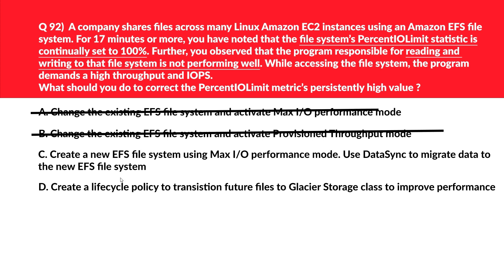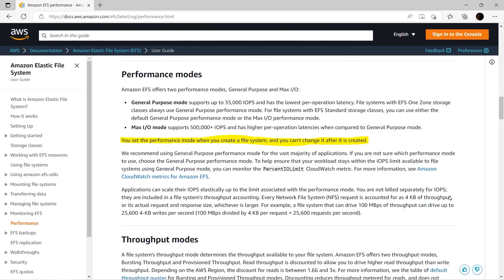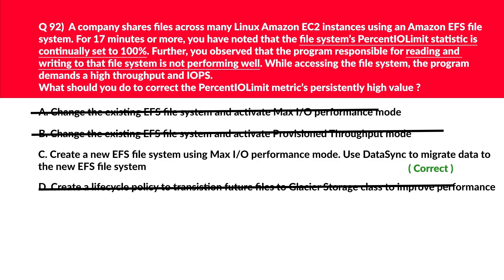Let's move to option D. It says create a lifecycle policy to transition files to Glacier storage class to improve performance. There is no Glacier storage class for EFS — there are only two storage classes: standard and infrequent access. Hence, invalid option, we'll reject this. As confirmed in the official documentation: you set the performance mode when you create a file system and cannot change it after creation. Hence, we'll log C as the correct answer.